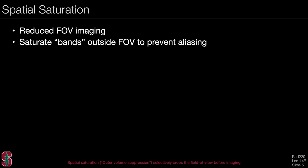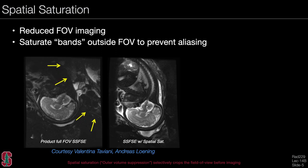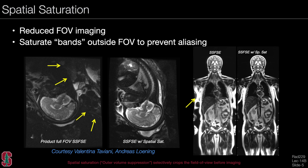Another common form of saturation is a spatial saturation approach. Here we want to do reduced field-of-view imaging because it may be faster. We saturate bands outside of the field of view to prevent the signal from these bands from aliasing into the field of view. For example, in a fetal image, using a spatial saturation band on the left with a single-shot spin-echo, we can remove signal coming from the mother's body that might otherwise obscure the fetal image. Similarly, if the arms are aliasing into the image, applying a spatial saturation outside the body removes this aliasing. So spatial saturations are generally used to prevent some kind of aliasing effect.